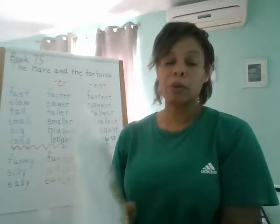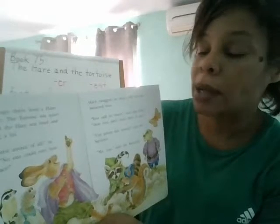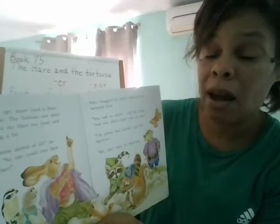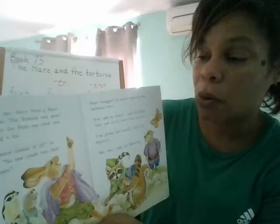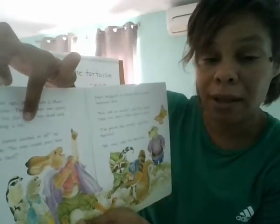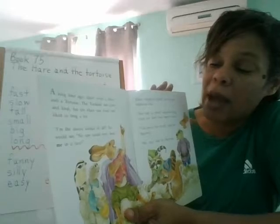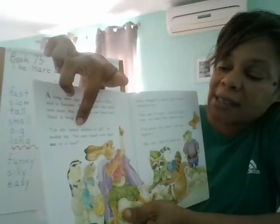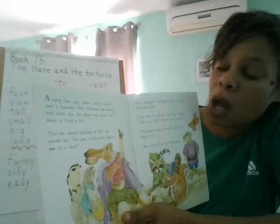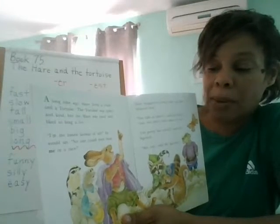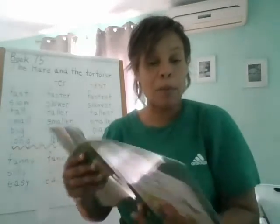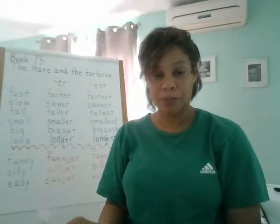A long time ago, there lived a hare and a tortoise. The tortoise was quiet and kind, but the hare was loud and liked to brag a lot. If you are a bragger, that means you think you are the best and you're kind of showing off. 'I'm the fastest animal of all,' he would say. 'No one could ever beat me in a race.' Now pause and read page two.